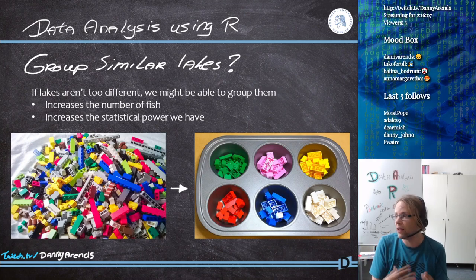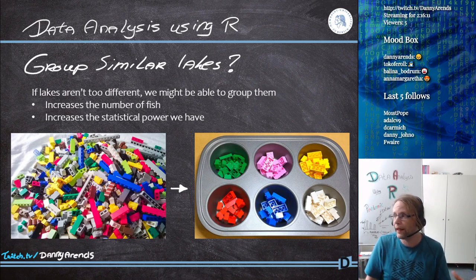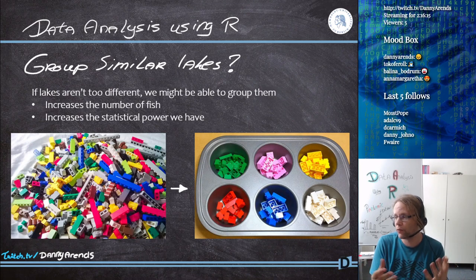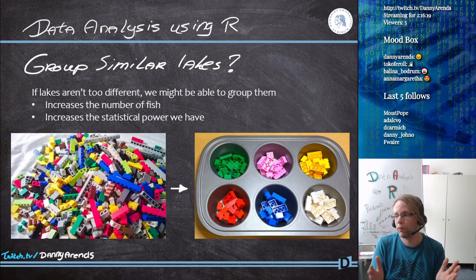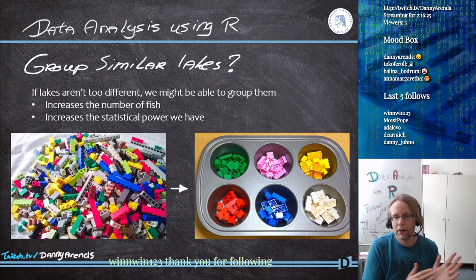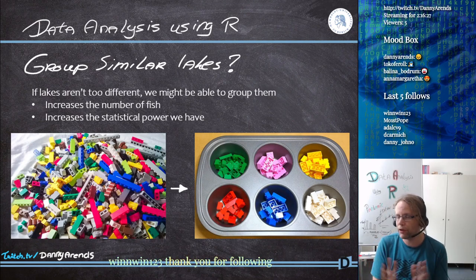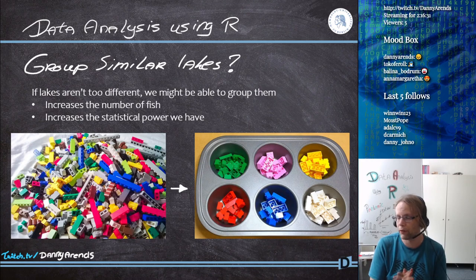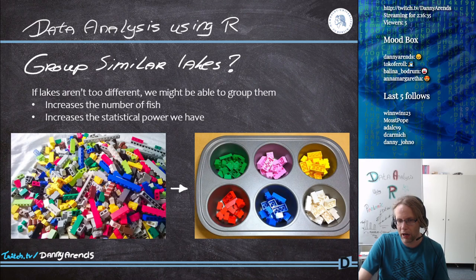The first idea is to just pretend all fish were caught in one big mega lake, but that's not easily done. However, if lakes aren't too different, we might be able to group them. If we group them, we increase the number of fish and also increase the statistical power, which is what we want.